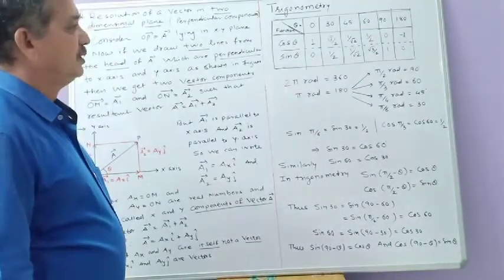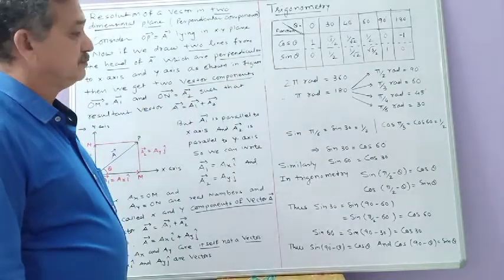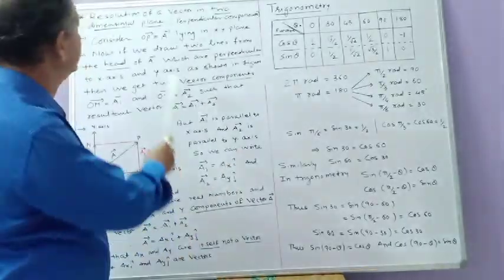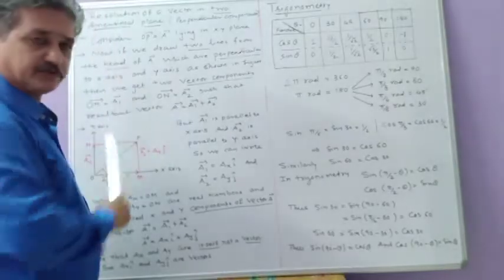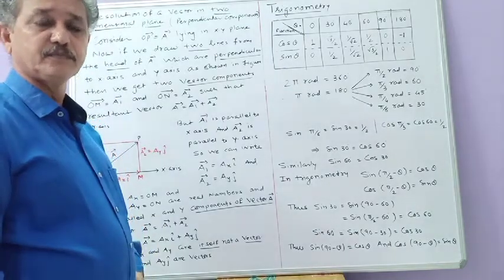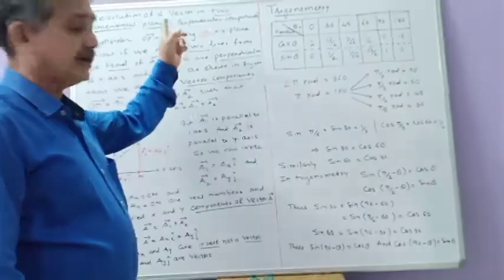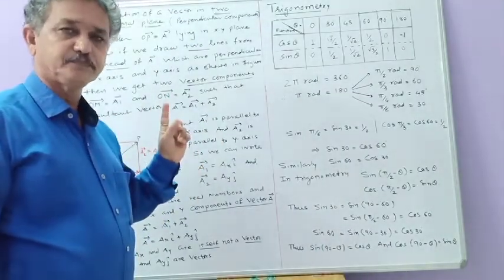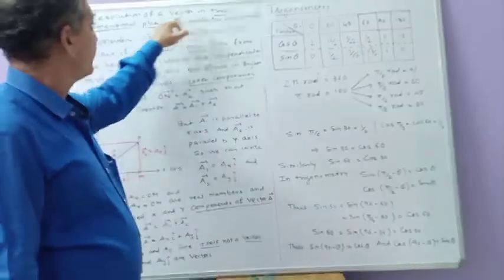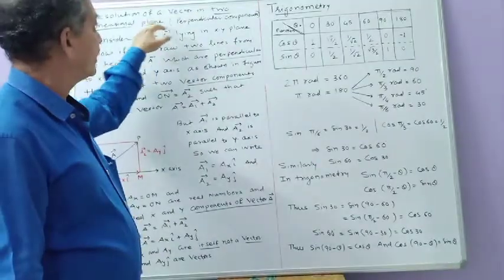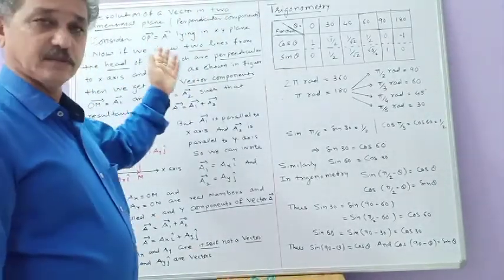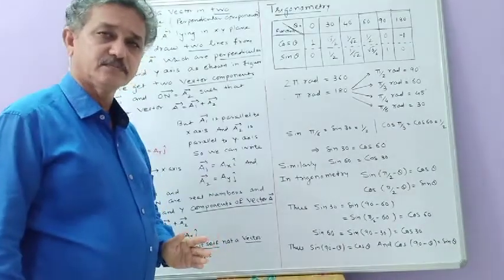Now let us review students' trigonometry, because we have to make use of this concept in the next topic. The next topic is resolution of a vector in two dimensions. We have studied earlier the resolution of a vector in a plane, but at that time the vector components were not perpendicular. Here the vector components are perpendicular — that is resolution of a vector in two dimensions, or resolution of a vector in terms of perpendicular vector components. But before that we see a little part of trigonometry.